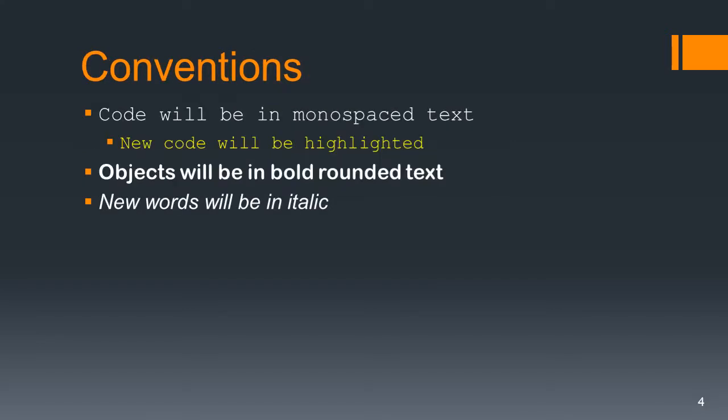The conventions will be as always: code will be monospace text, new code will be highlighted in yellow, objects will be in bold rounded text, and any new words will be introduced in italics.